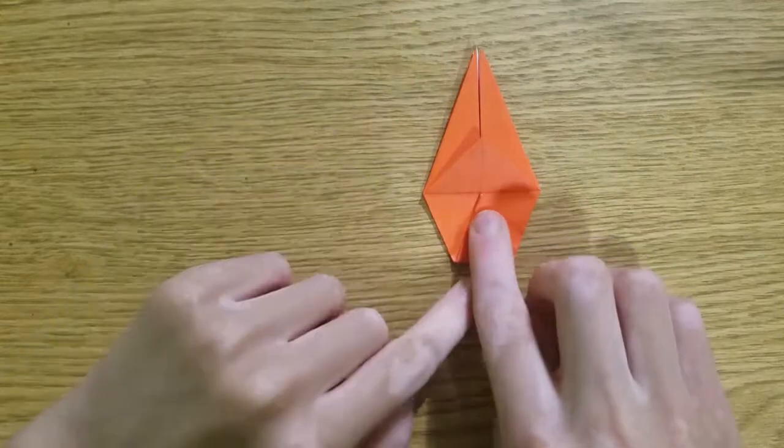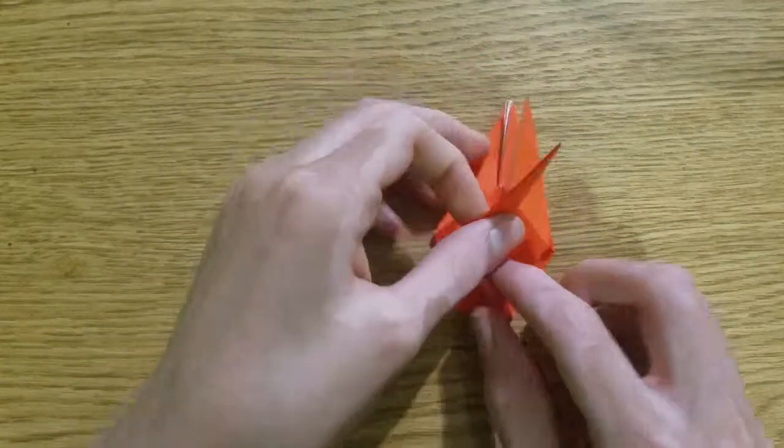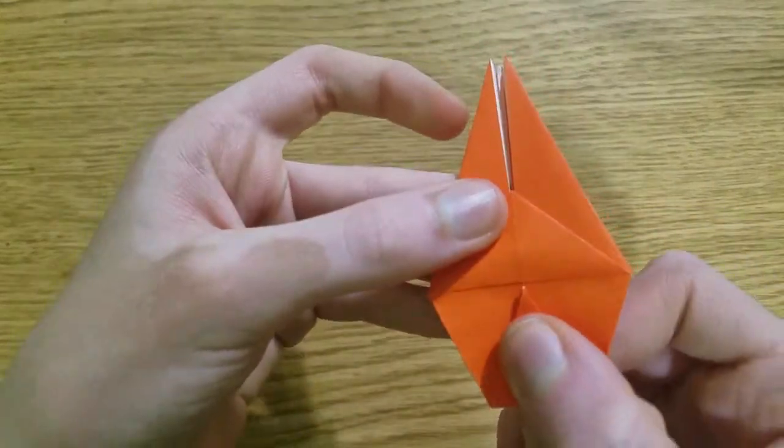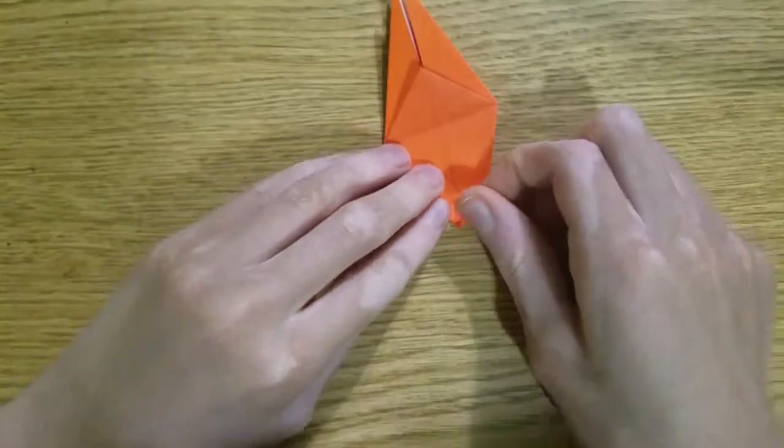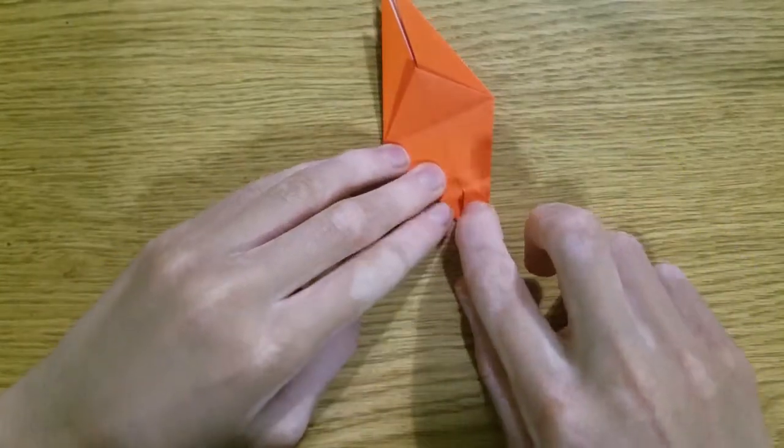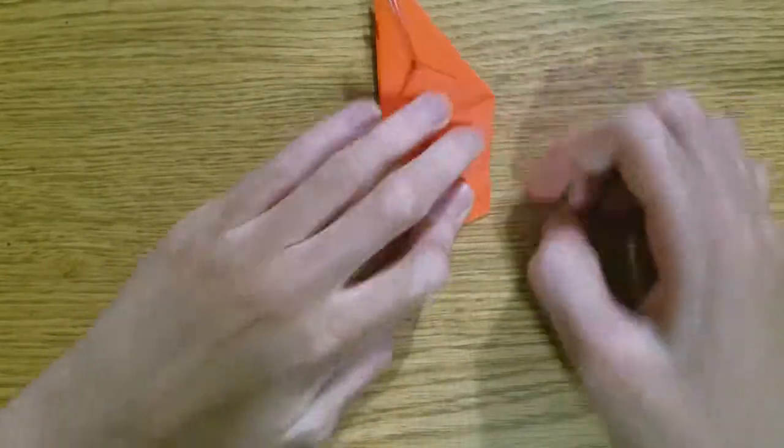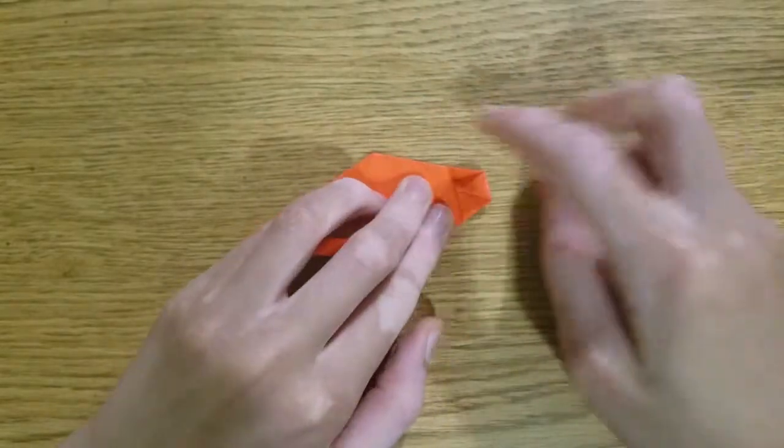So first in half. Fold it to that point. Unfold. Fold the edge to the crease you just made. Unfold.